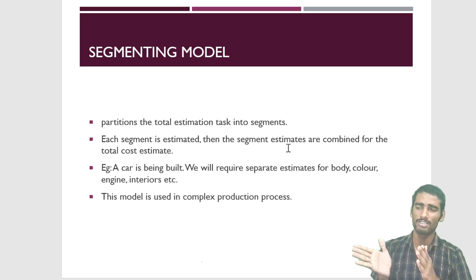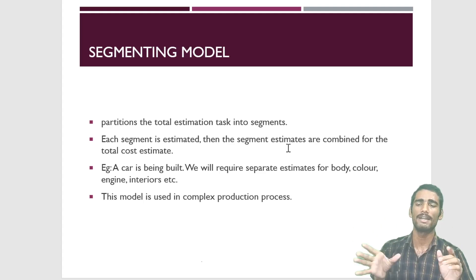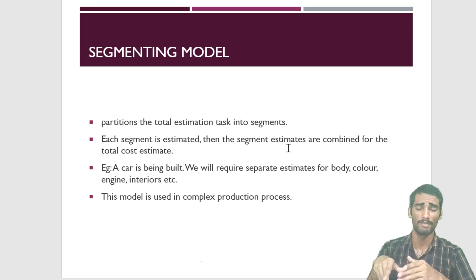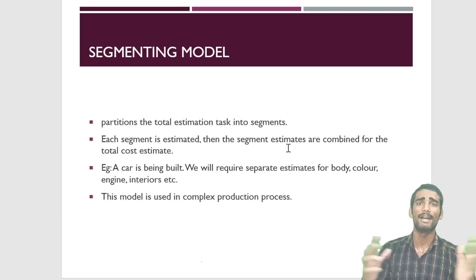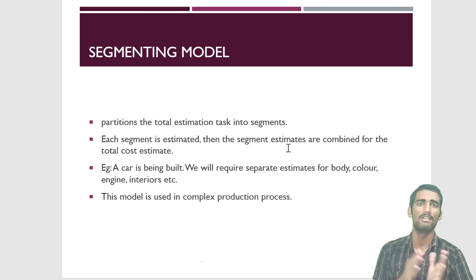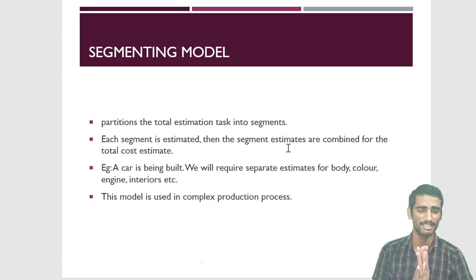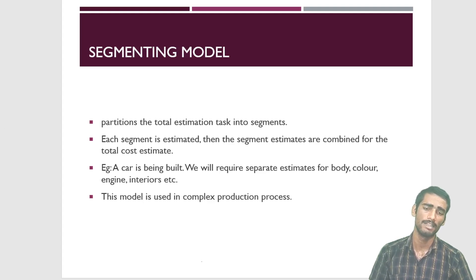For example, take a pizza — we divide it into various segments, say five segments. For each segment we find the cost: suppose the first segment costs 2 rupees, the second 3 rupees, the third 4 rupees. After finding the cost estimate of each segment, we combine all of them. This is our segmenting model.